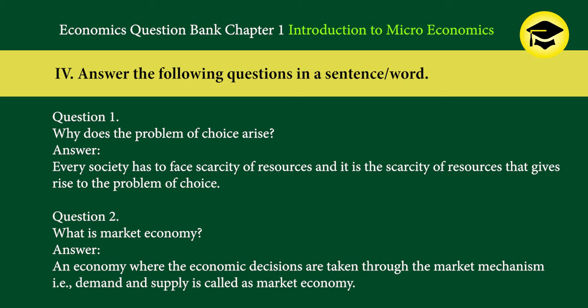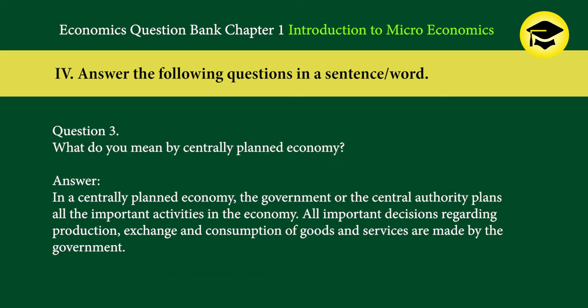Answer the following questions in a sentence. Question 1: Why does the problem of choice arise? Answer: Every society has to face scarcity of resources, and it is the scarcity of resources that gives rise to the problem of choice. Question 2: What is market economy? Answer: An economy where economic decisions are taken through the market mechanism, i.e., demand and supply, is called a market economy.